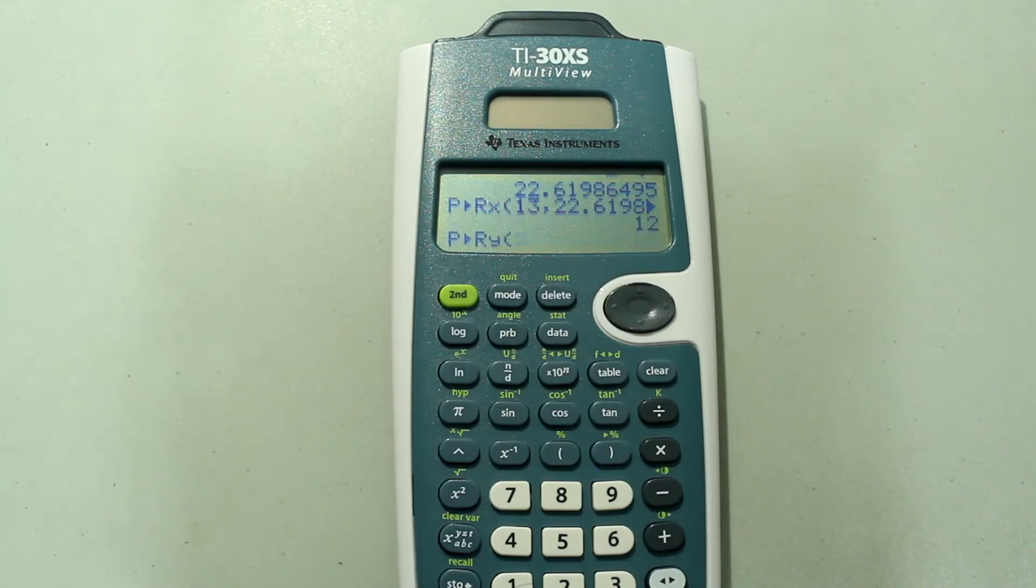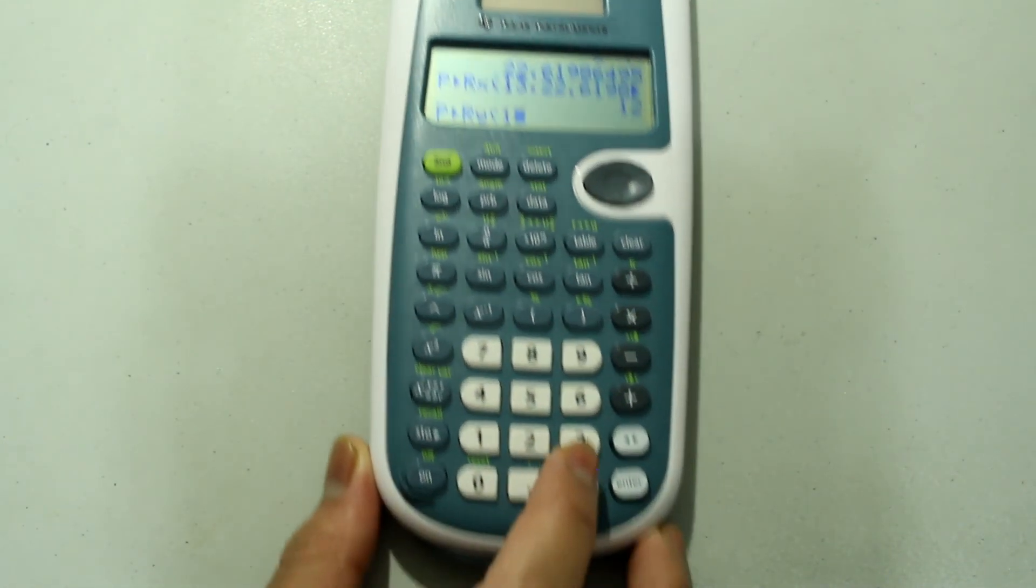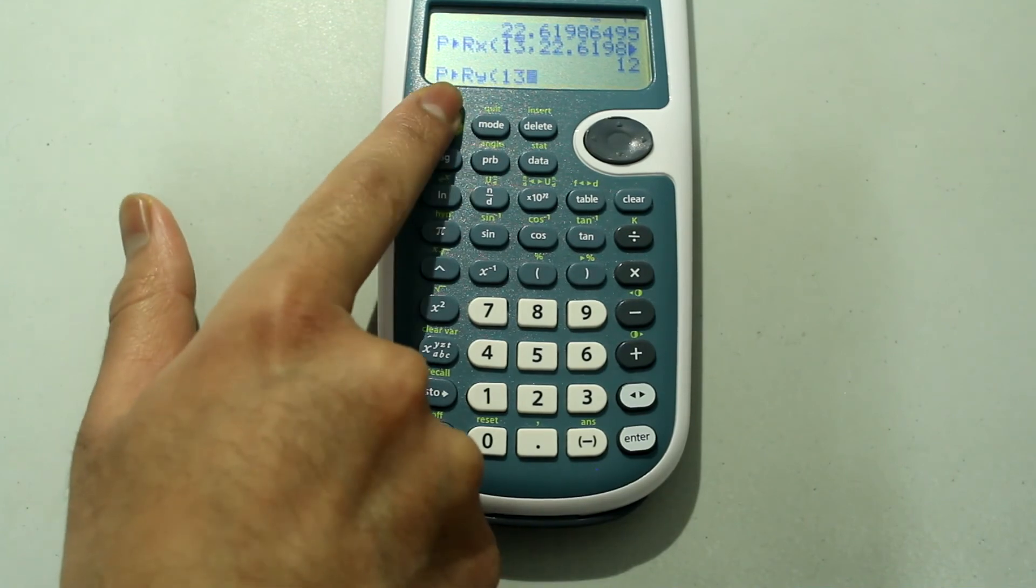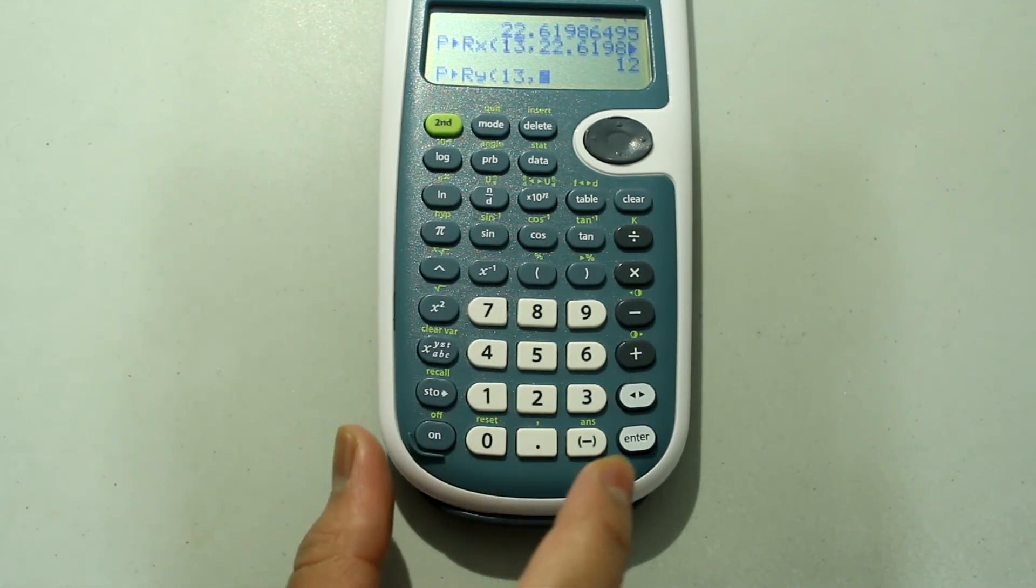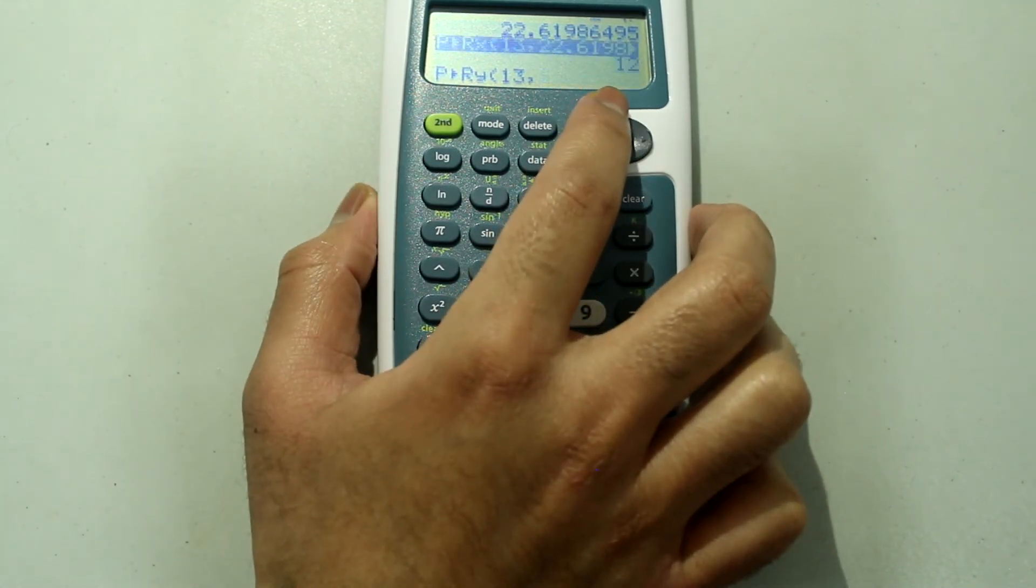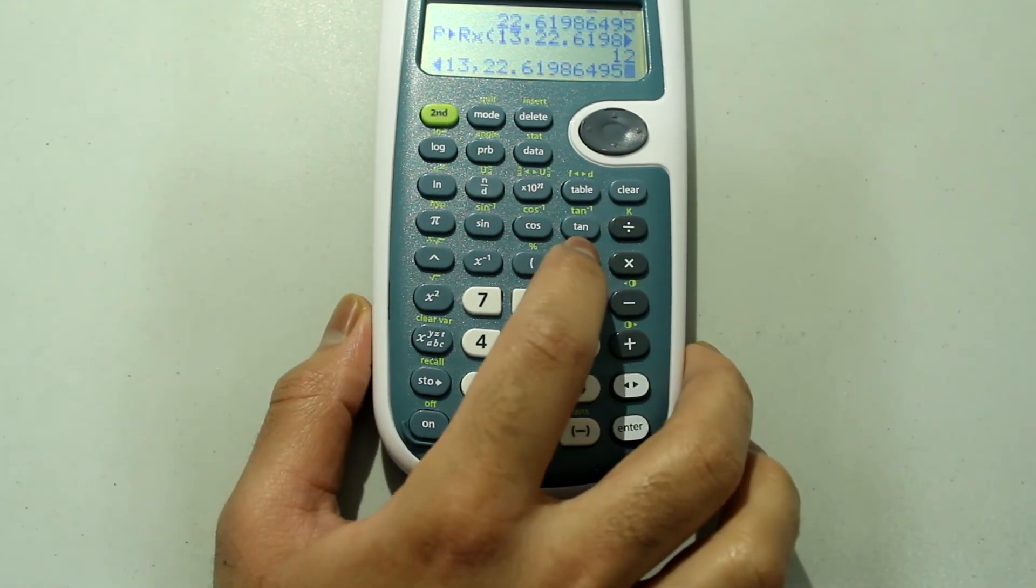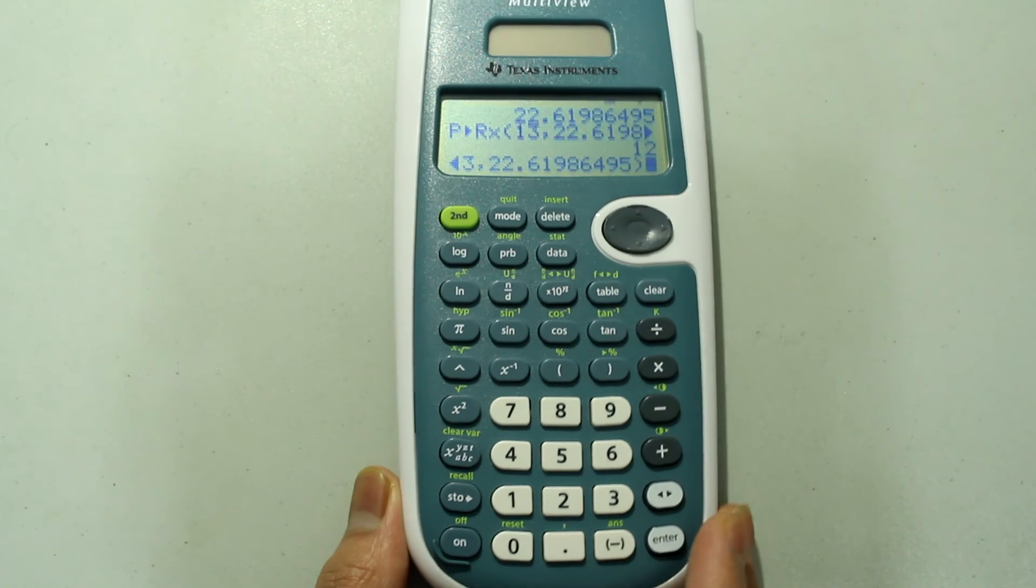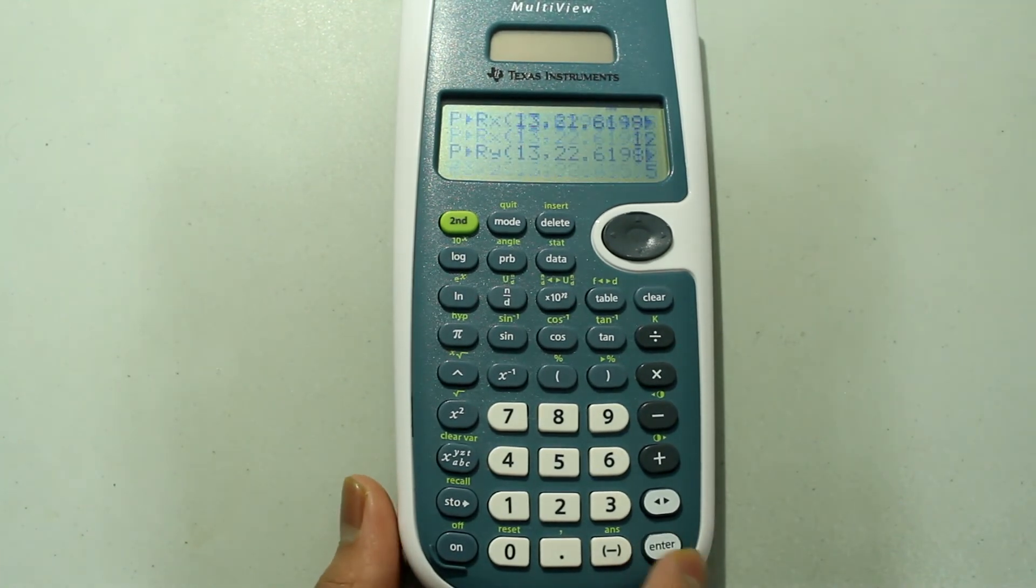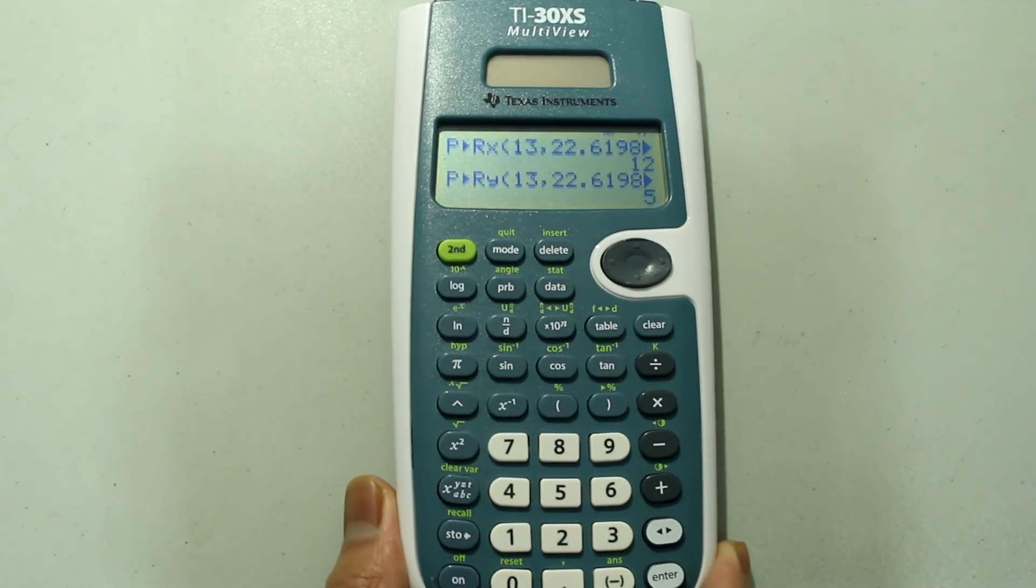So now, once again, the input is going to look just like the previous one. So that's going to be 13 second. And I'm going to, once again, just select the previous angle. Just arrow up and press enter, close off the parentheses, and press enter, and there we go. We get the y value.